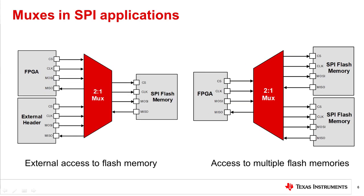Multiplexers can be used in many ways to benefit your SPI application. For example, MUXs may be used to select between multiple internal or external memory banks, as shown here. MUXs may also be used to expand chip select output if multiple secondary devices are connected to a main controller. In addition, TI has some multiplexers with signal path translation if main and secondary devices are not voltage compatible.